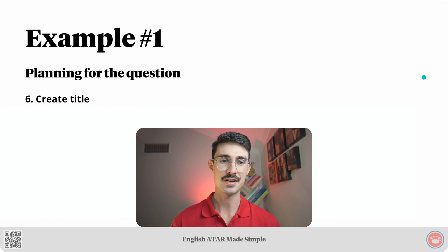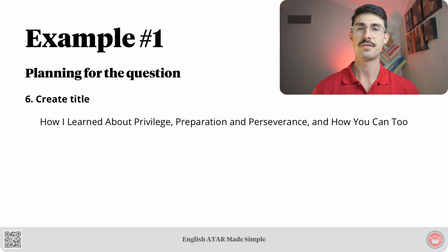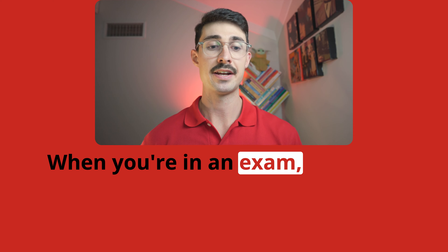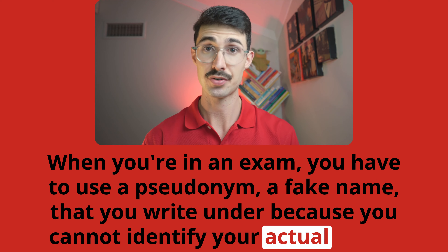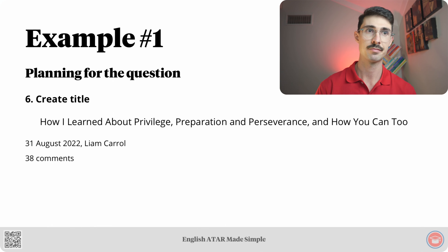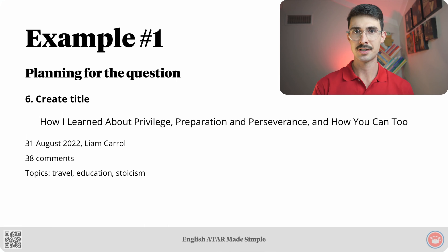The final step is create a title — step number six. Here's the title and subtitle: 'How I Learned About Privilege, Preparation, and Perseverance — and How You Can Too.' The byline has the date, 31 August 2022, and the author's name, Liam Carroll. Don't forget: when you're in an exam, you have to use a pseudonym — a fake name — because you cannot identify your actual name, as that defeats the purpose of having student numbers. Next, we've got the comments section where we state a random number of comments. Finally, we mention some topics: travel, education, and stoicism.